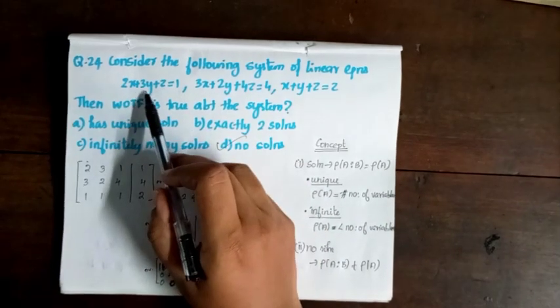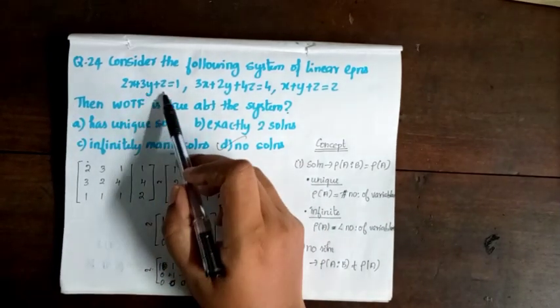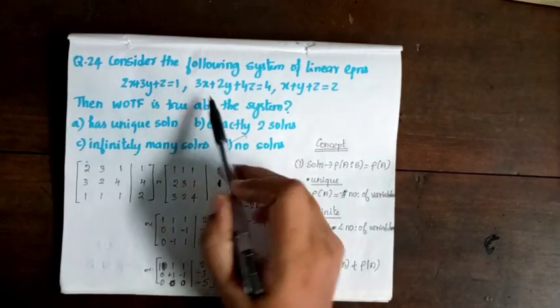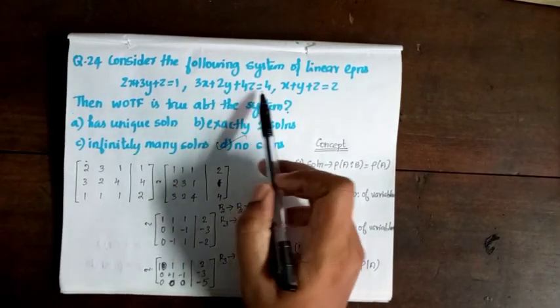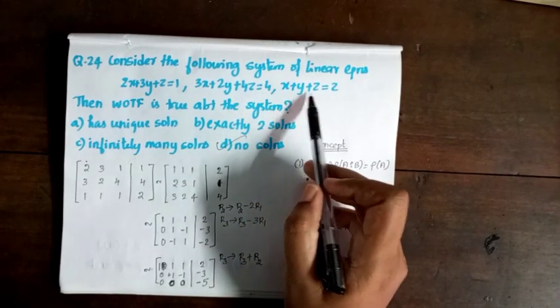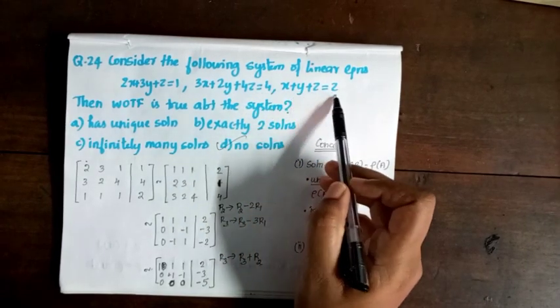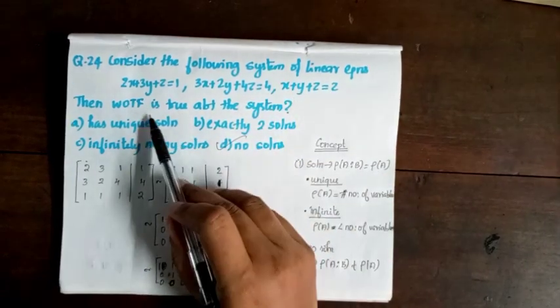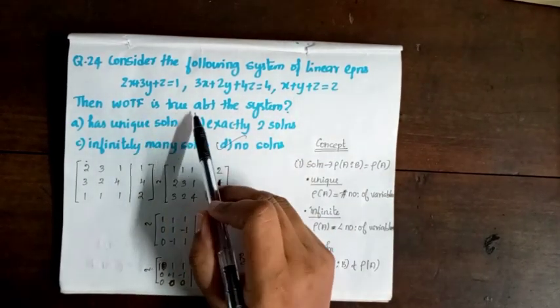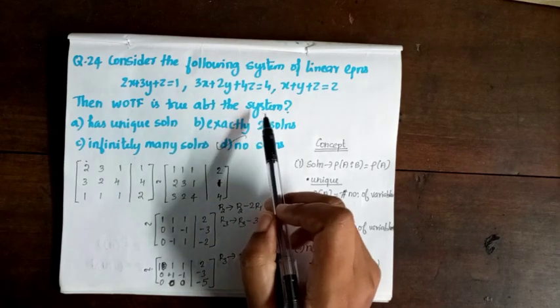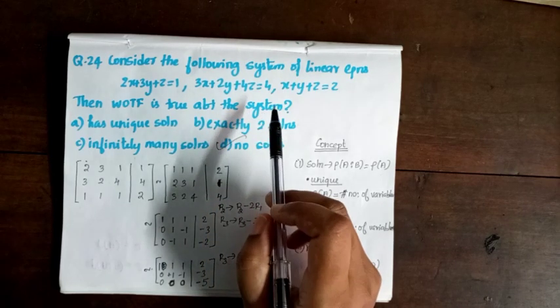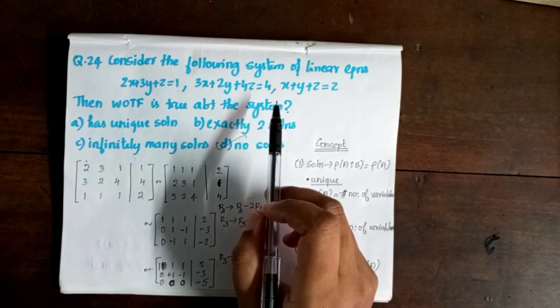Next problem involves a system of linear equations: 2x + 3y + z = 1, 3x + 2y + 4z = 4, x + y + z = 2. Which of the following is true about this system?